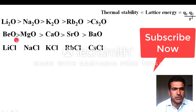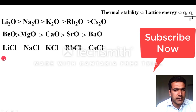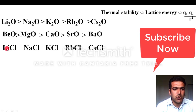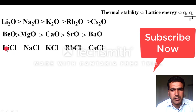Another question: the chlorides of Group 1 — lithium chloride, sodium chloride, potassium chloride, rubidium chloride, and cesium chloride. Chloride is a monoatomic anion. For monoatomic anions, thermal stability depends on lattice energy. As you move from lithium to cesium, the cation size increases, so r increases and lattice energy decreases.